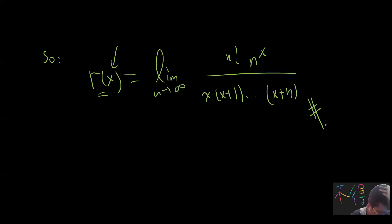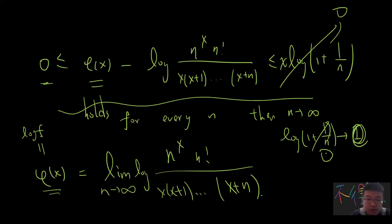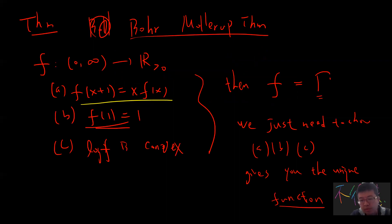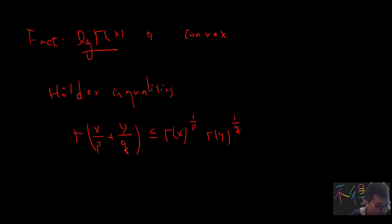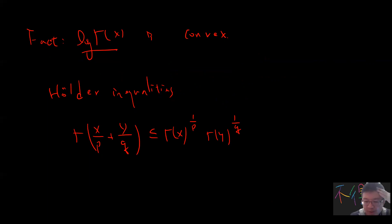So that's the Bohr-Mollerup theorem. There's also a thing called the Stirling formula, but I don't want to prove it here since I already proved it in my other videos. So this video just proved this theorem. I'll see you guys in the next video, where we will go to the inverse function theorem for several variables — it's very difficult. See you guys, bye-bye, subscribe to my channel.